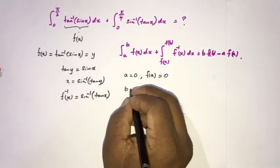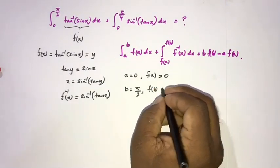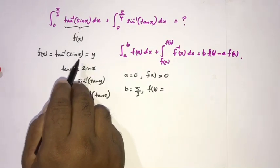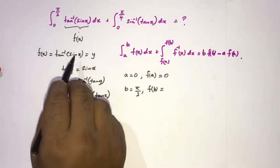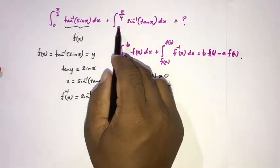Then upper limit f(b) is equal to sine of π/2, which we know is 1. Inverse tan of 1 we know is π/4.